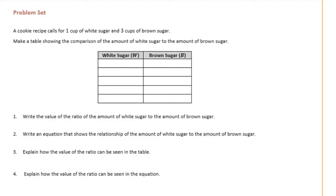Sixth grade, module one, lesson 13 problem set. A cookie recipe calls for one cup of white sugar and three cups of brown sugar. Make a table showing the comparison of the amount of white sugar to the amount of brown sugar. So for every one cup of white sugar, there are three cups of brown sugar.